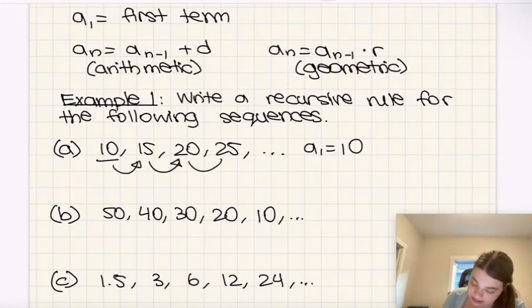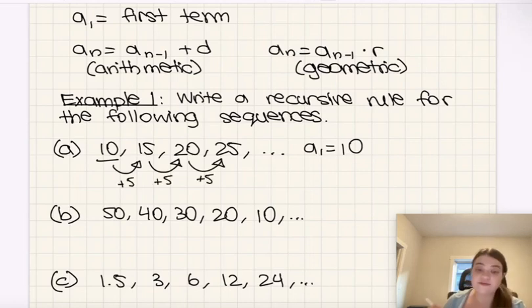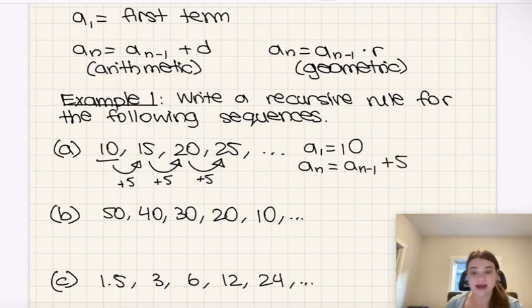Notice how to get to the next term, we add 5 every time. That means that 5 is the common difference, and that this is an arithmetic sequence. So for the rest of my recursive formula, the nth term is equal to the previous term plus the common difference, plus 5.